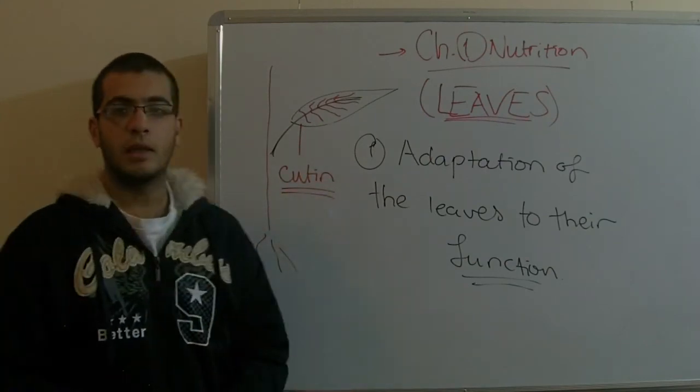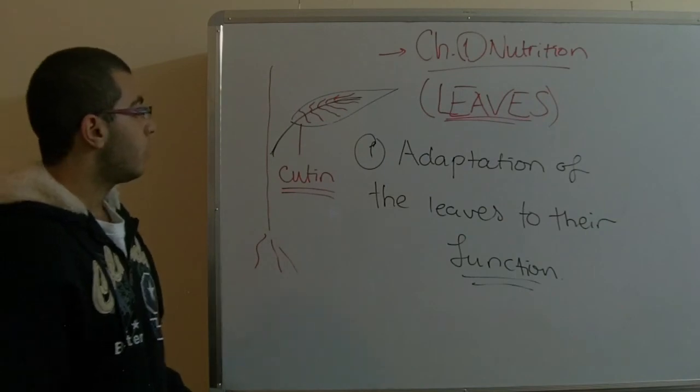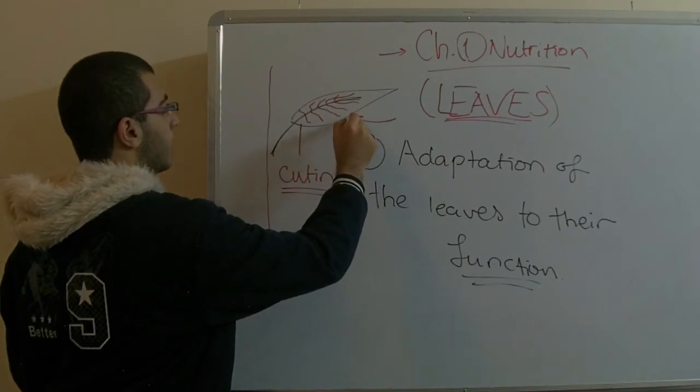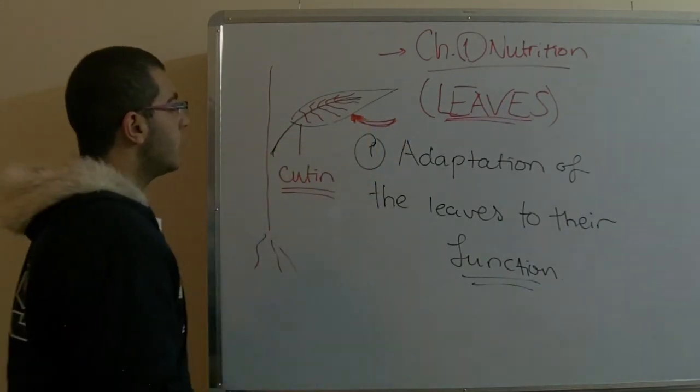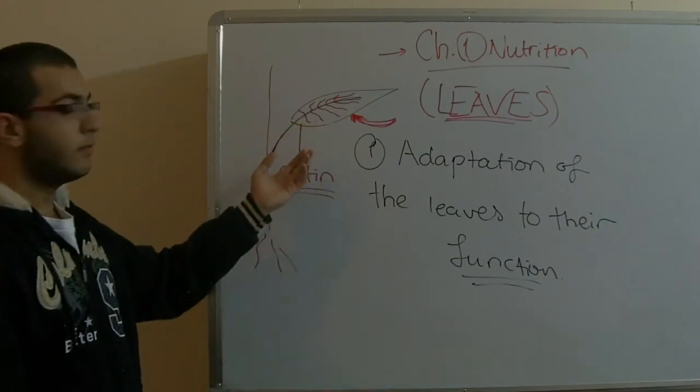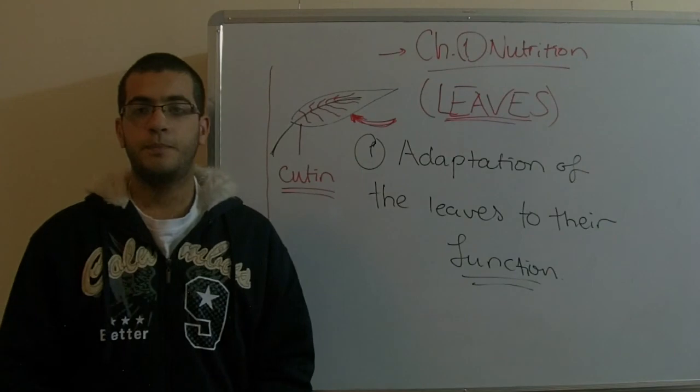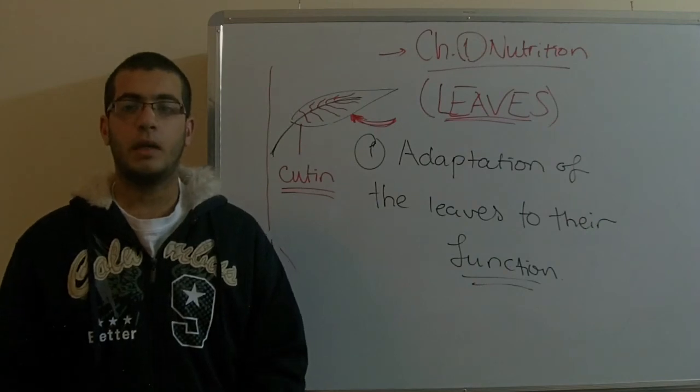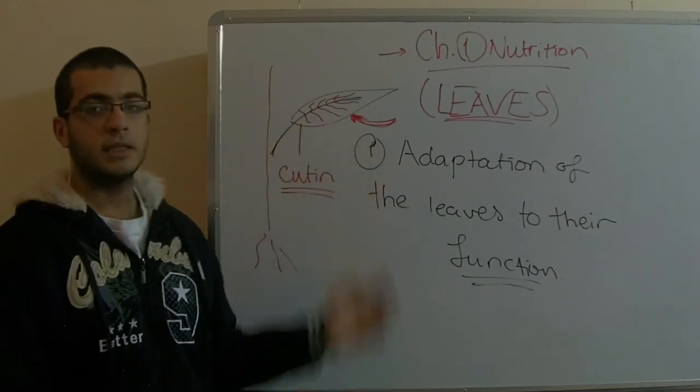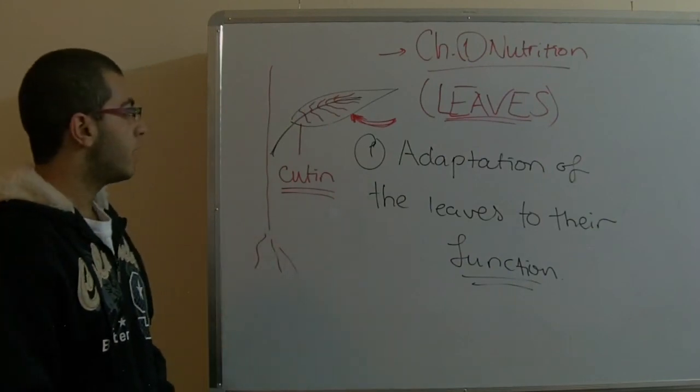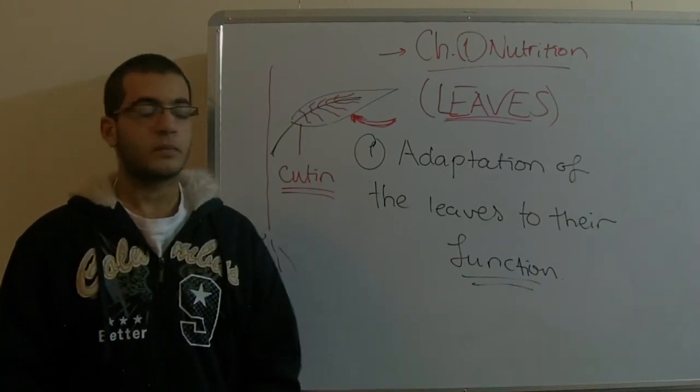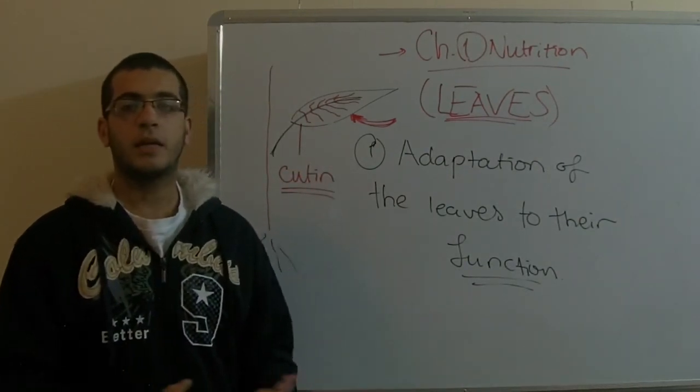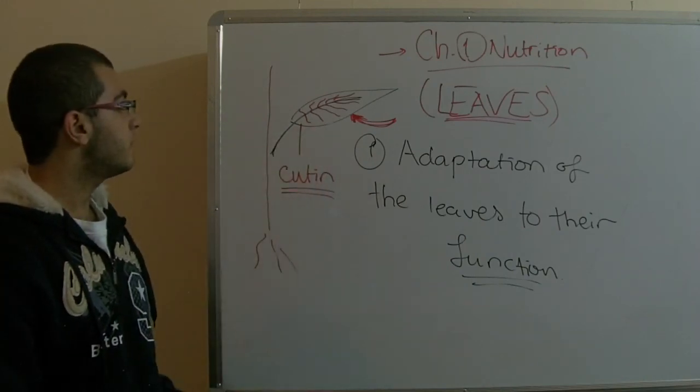There are small pores that occur almost in the inner part of the leaf, and they are called stomata. These pores allow gaseous exchange so that the leaf can absorb carbon dioxide and give out oxygen. This also controls humidity because through the stomata, the plant gives out water vapor.